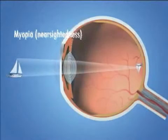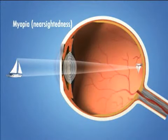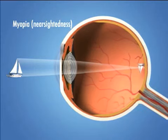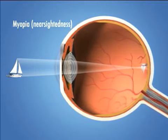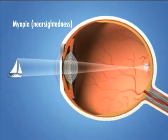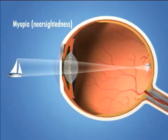Myopia is also known as nearsightedness. This occurs when the distance between the cornea and the retina is too long. Light rays entering the eye are focused in front of the retina, causing the image that falls on the retina to be blurred.